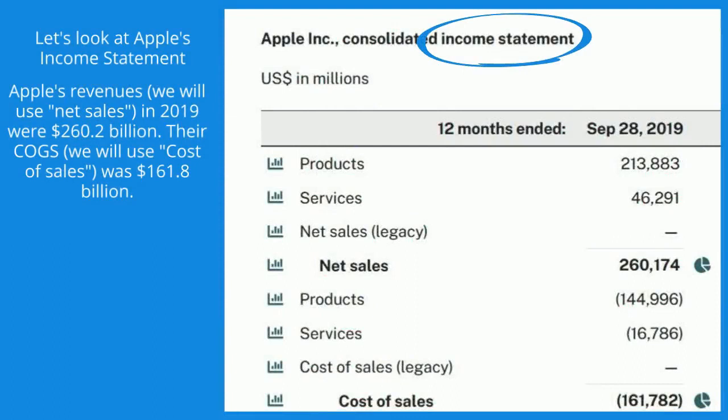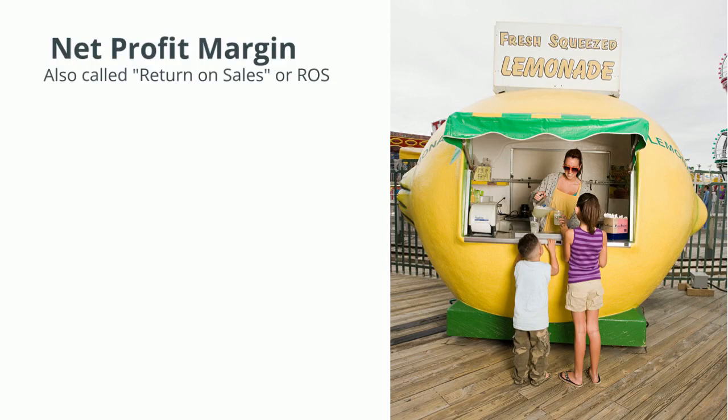Now let's look at Apple's income statement. Apple's net sales in 2019 were $260.2 billion. Their cost of goods sold — cost of sales — was $161.8 billion. That means their gross margin was 37.8%.